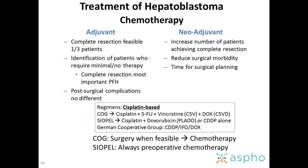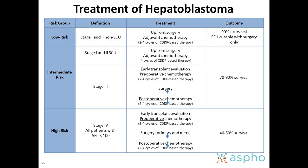Chemotherapy is cisplatin-based. In North America we use cisplatin, 5-FU, and vincristine — the C5V regimen — and we add doxorubicin (C5VD) for unresectable cases. SIOPEL in Europe has used the PLADO regimen, which is cisplatin with doxorubicin, or cisplatin alone for early-stage tumors.